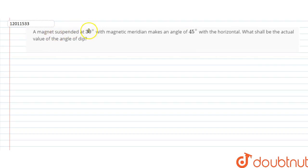A magnet is suspended at 30 degrees with the magnetic meridian and it makes an angle of 45 degrees with the horizontal. What shall be the actual value of the angle of dip?